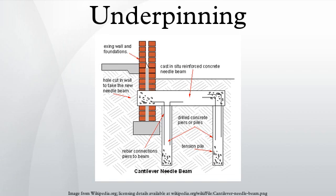Mini-piled underpinning schemes include pile and beam, cantilever pile caps, and piled raft systems. Cantilevered pile caps are usually used to avoid disturbing the inside of a building and require the construction of tension and compression piles to each cap, normally linked by a beam. The pile and beam system usually involves constructing pairs of piles on either side of the wall and linking them with a pile cap to support the wall. The pile caps are usually linked by reinforced concrete beams to support the entire length of the wall.